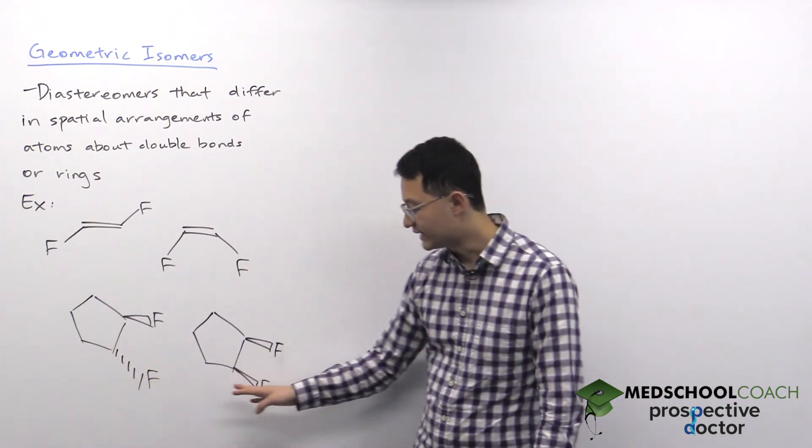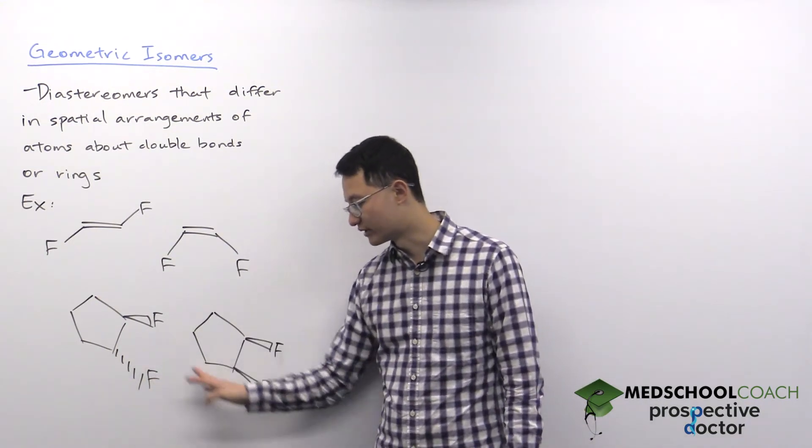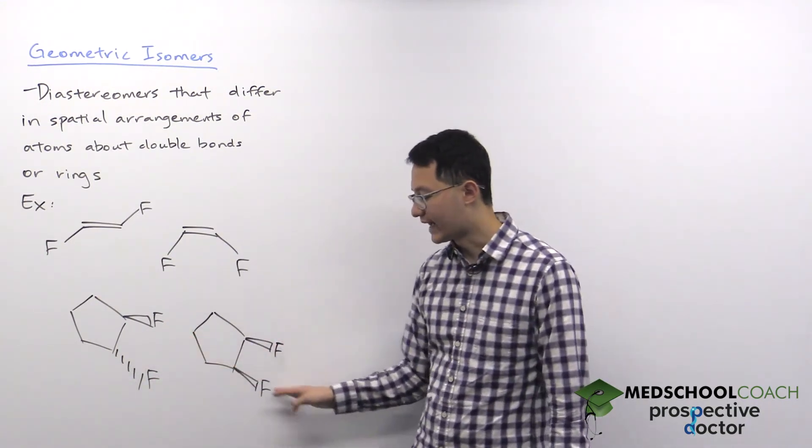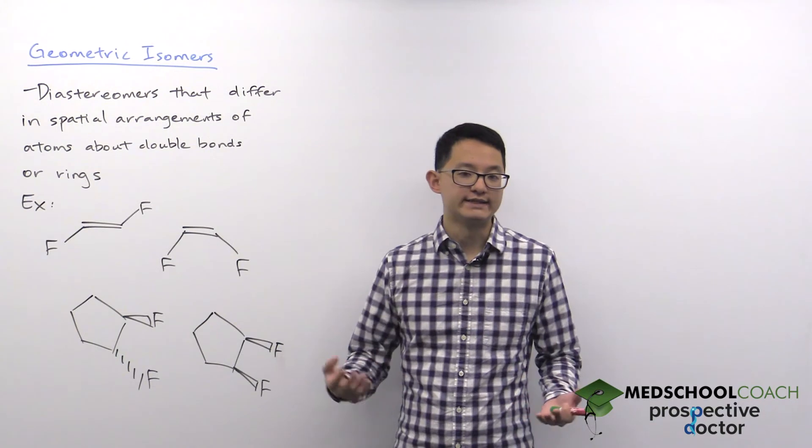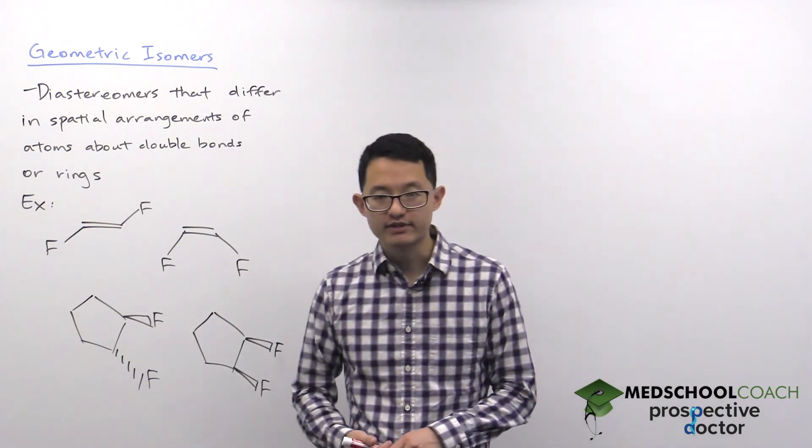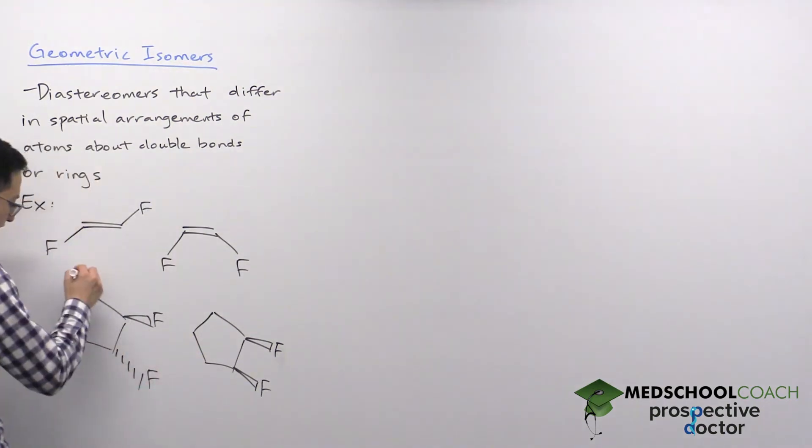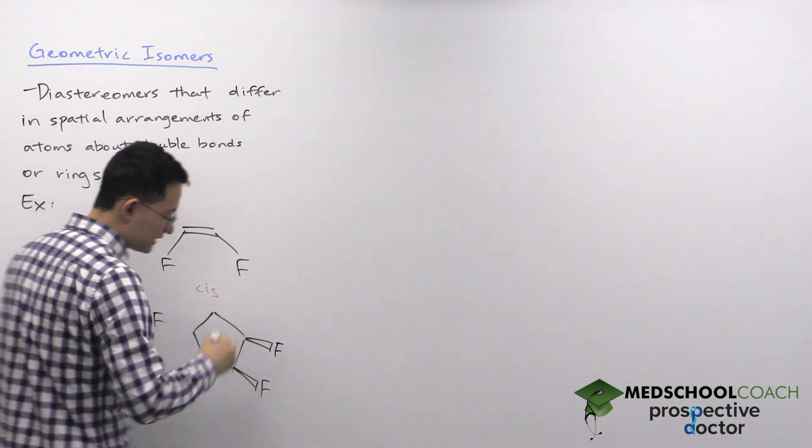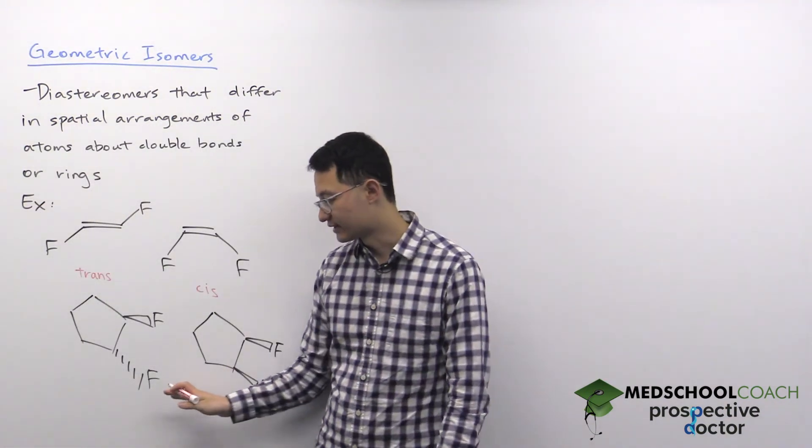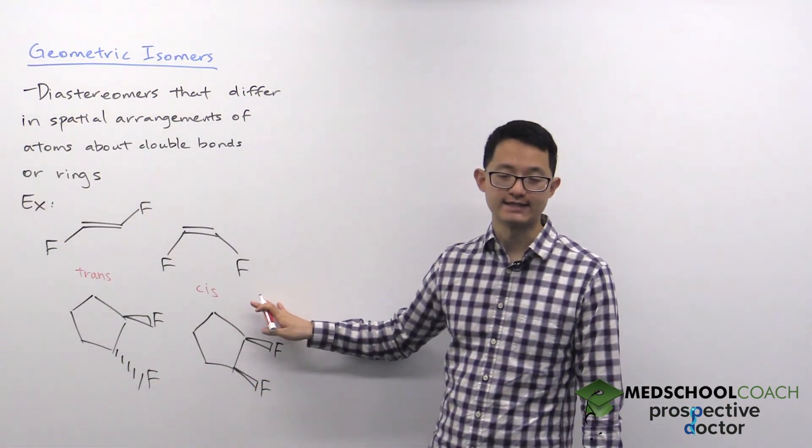The same is true in these two cyclic structures where you can see again the fluorine atoms attached are oriented differently. We'll have a subsequent video that goes over this naming convention in more detail, but in general if you have two groups, if they're on opposite sides then they are trans, and if they're on the same side then they are cis.